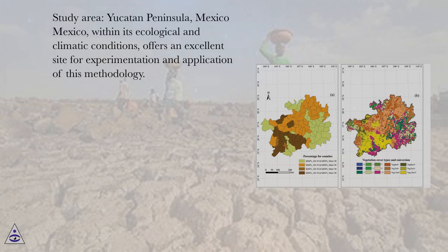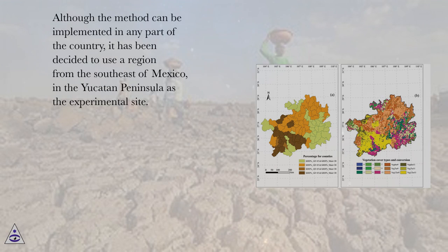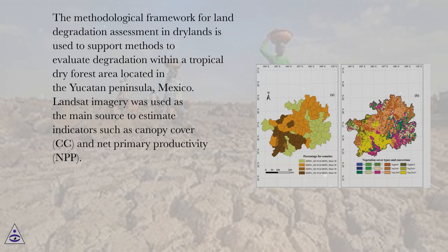Study Area: Yucatan Peninsula, Mexico. Mexico, within its ecological and climatic conditions, offers an excellent site for experimentation and application of this methodology. Although the method can be implemented in any part of the country, it has been decided to use a region from the southeast of Mexico, in the Yucatan Peninsula, as the experimental site. The methodological framework for land degradation assessment in drylands is used to support methods to evaluate degradation within a tropical dry forest area located in the Yucatan Peninsula, Mexico.